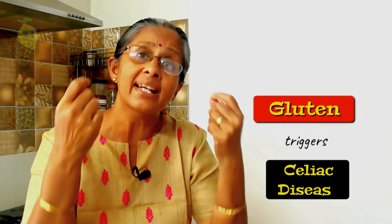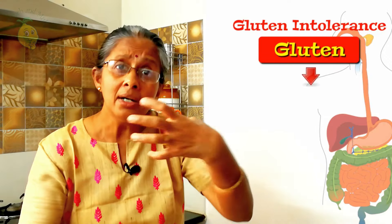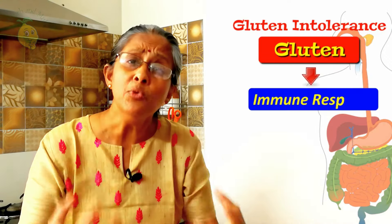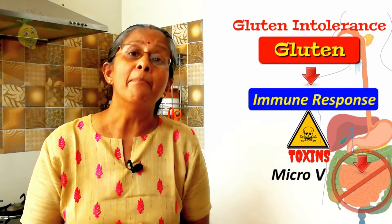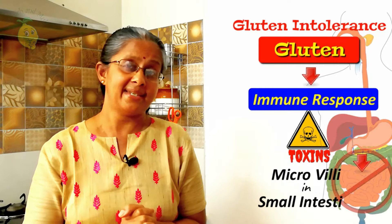There are many people who are allergic to gluten and this gluten triggers celiac disease. In gluten intolerant people, gluten triggers an immune response so that certain toxins are liberated which destroy the microvilli in the small intestine.